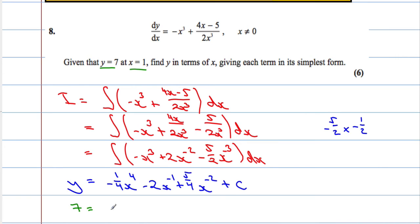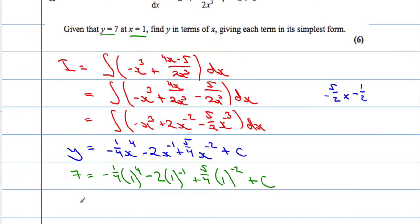So it must equal 7 when x equals 1. So we get negative 1 over 4 times 1 to the power 4 minus 2 times 1 to the power of negative 1 plus 5 over 4 times 1 to the power of negative 2 plus the c. Now what we need to do is tidy this up. So we get 7 equals 1 to the power of negative 1. So we get negative 1 quarter. This is going to be 1 multiplied by negative 2 is also negative 2. And then 1 to the power of negative 2 is also 1. So I'm still just going to add 5 over 4 plus that c.